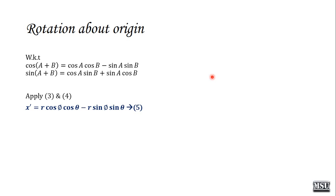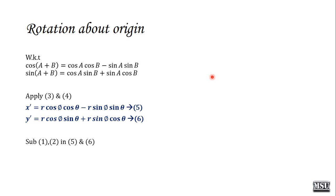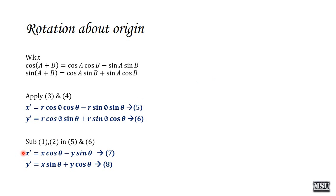Expanding: x dash = r cos phi cos theta − r sin phi sin theta, and y dash = r cos phi sin theta + r sin phi cos theta. Substituting equations 1 and 2 (x = r cos phi, y = r sin phi), we get the final rotation formulas: x dash = x cos theta − y sin theta, and y dash = x sin theta + y cos theta.